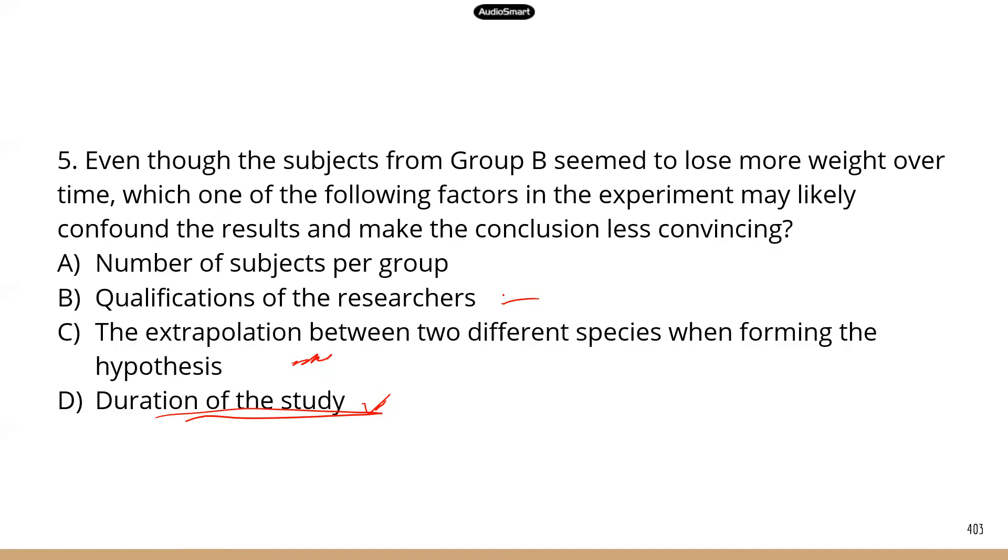A, number of subjects per group. And that's the correct answer. Because right now there are only five subjects in each group. And that's a very small sample size for a study like this. And you can't just say this compound can help you lose weight, and our data is based on five subjects per group and a total of 10 subjects. That's a very, very small number for either animal studies or human studies. So A is the correct answer.